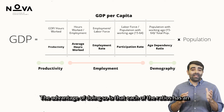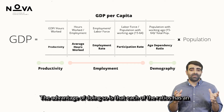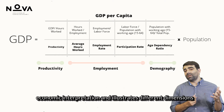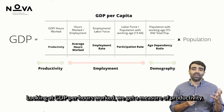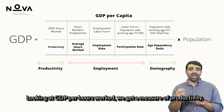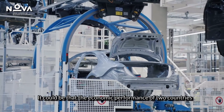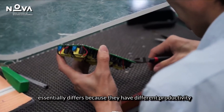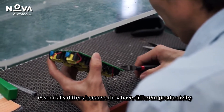The advantage of doing so is that each of the ratios has an economic interpretation and illustrates different dimensions of the economy. Looking at GDP per hours worked, we get a measure of productivity. It could be that the economic performance of two countries essentially differs because they have different productivity levels.